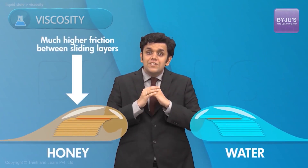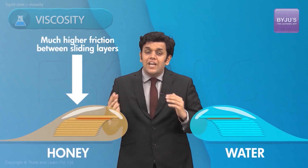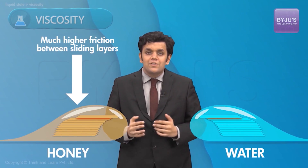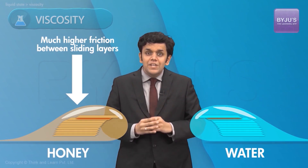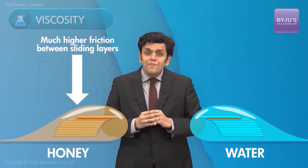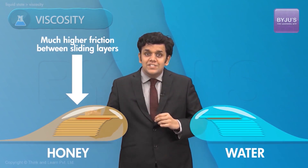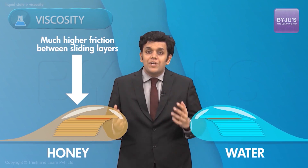For example, for honey, the value of this resistance is much higher as compared to that of water. Because of this, water flows with much lower resistance as compared to honey. Hence, water reaches the bottom of the inclined plane much faster than honey.